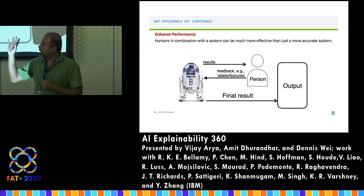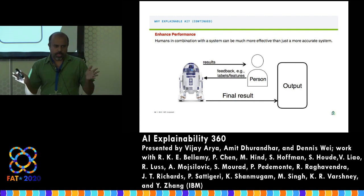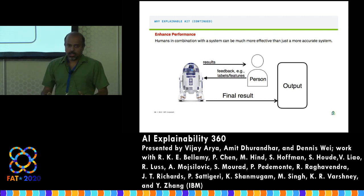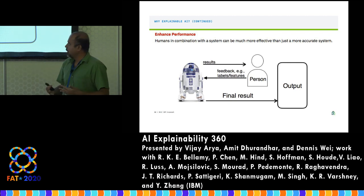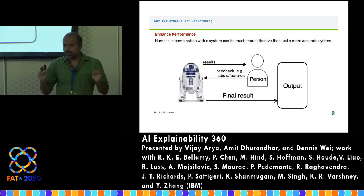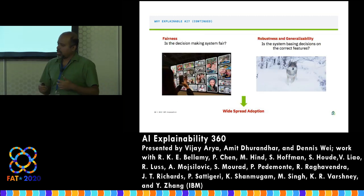In many domains the final decision is eventually taken by a human. If a human understands why a decision was made, the system of machine and human together can be much more efficient and accurate than a black box making predictions alone. Even a suboptimal model in terms of accuracy, if it is understandable and allows humans to reason with it, can increase overall performance in terms of the final decision. These are some of the main motivations for explainability.